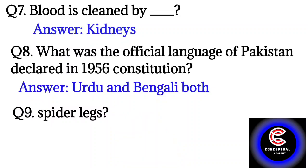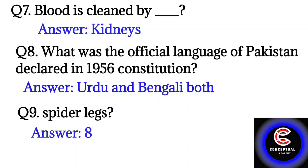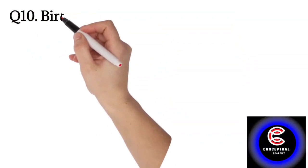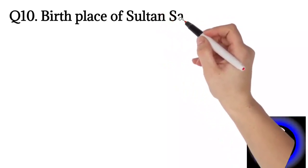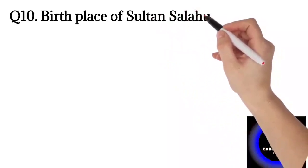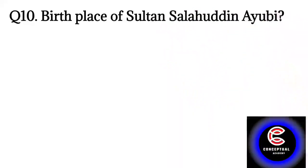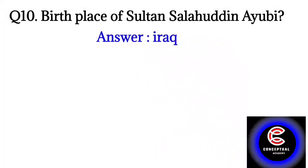Question number nine: how many legs does a spider have? A spider has eight legs, so the answer is eight. Question number ten: the birthplace of Sultan Salahuddin Ayubi. Sultan Salahuddin Ayubi was born in Iraq, so the answer is Iraq.